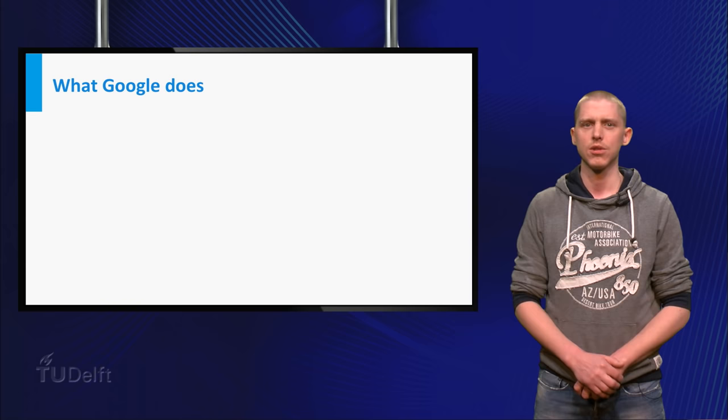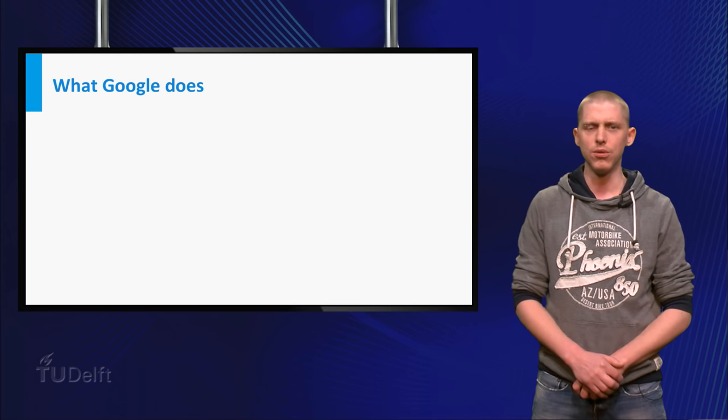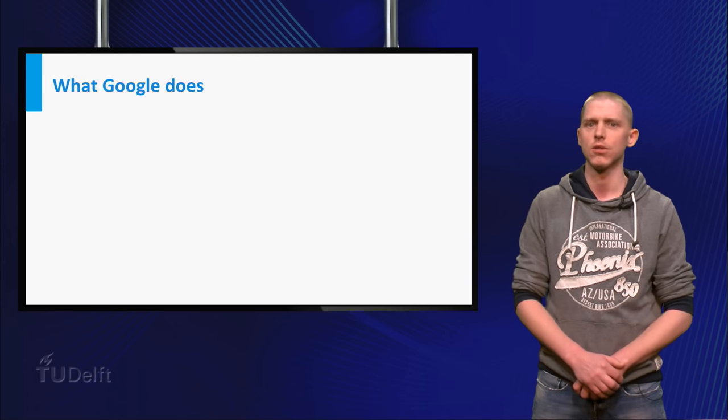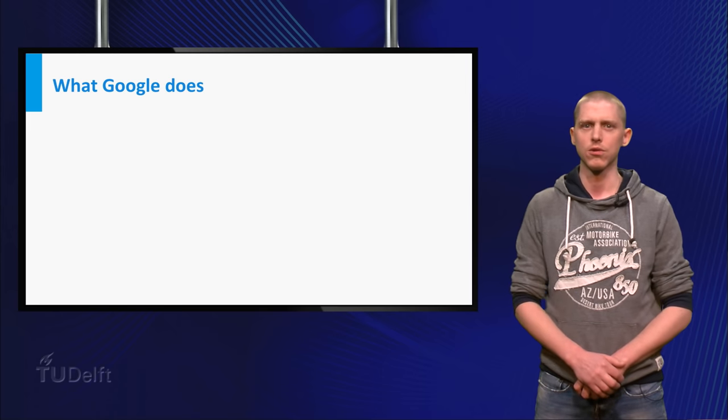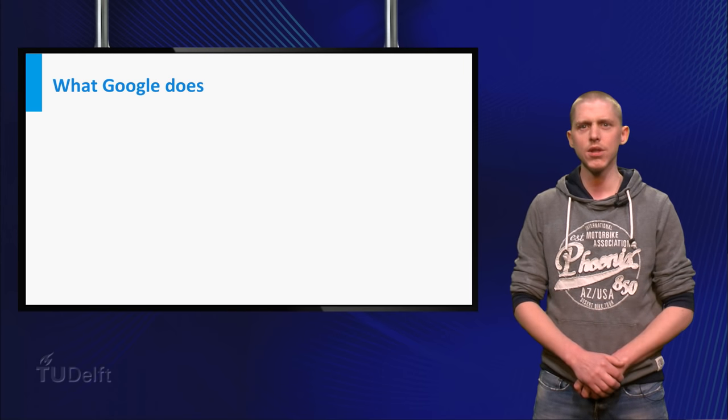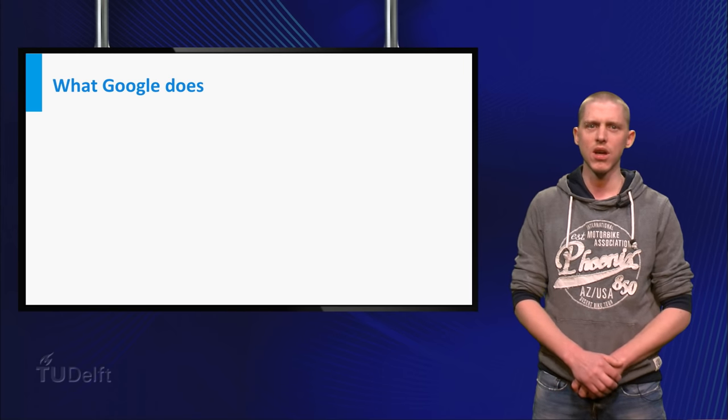So why does Google use these matrices? Well, the algorithm Google uses is based on a special vector of a matrix to sort your search results. This vector is the score of a page within the entire internet.